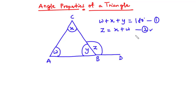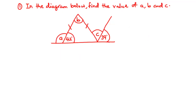We are going to use these two equations to solve a number of examples. For example 1, find the value of A, B, and C. In the diagram we have an isosceles triangle because two sides are equal, so the base angles are also equal. If one base angle is 42 degrees, then the other base angle is also 42 degrees. Let's find the value of A.